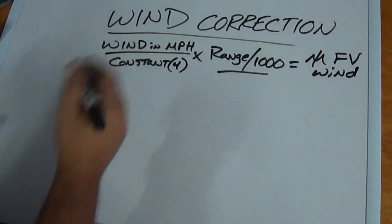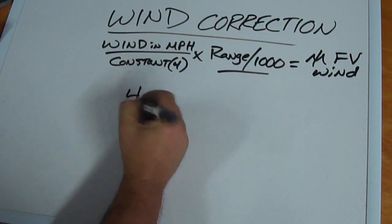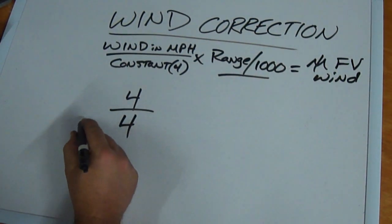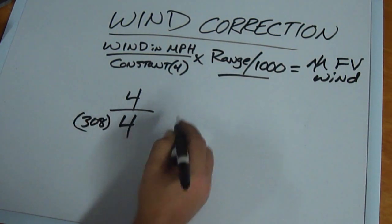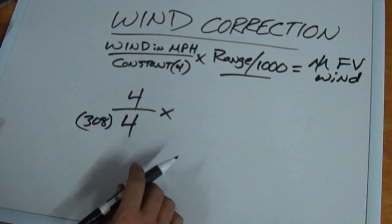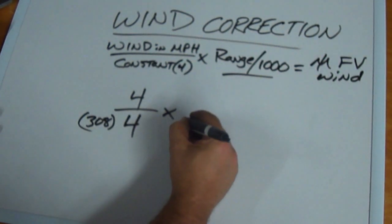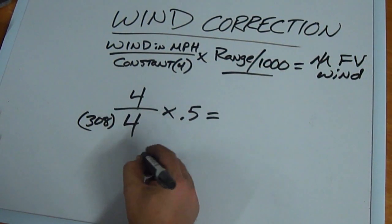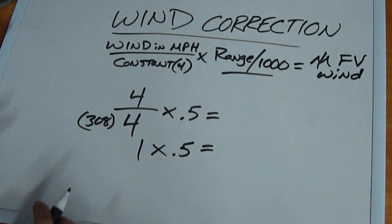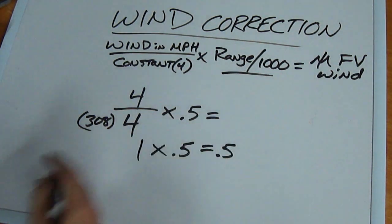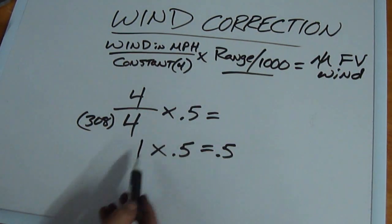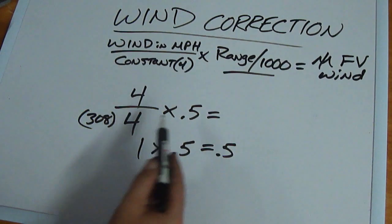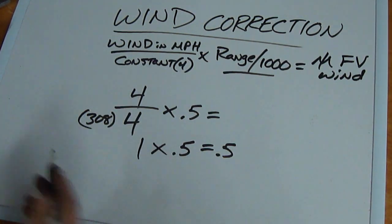So what we're going to do is take our wind in miles per hour. Let's say we have a four mile an hour breeze. We're going to divide that by our constant, which in this case for the .308 is four. We're going to multiply that by whatever range we're shooting at. Let's say we're at 500 yards, so we have .5. Four divided by four is one, times .5 equals .5. We're going to use a half a mil full value wind for a 500 yard shot with a four mile an hour crosswind. Keep in mind this is full value.